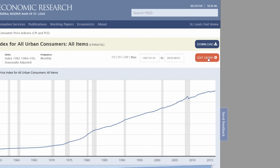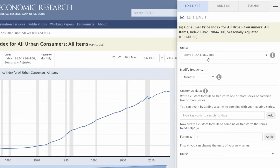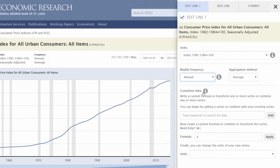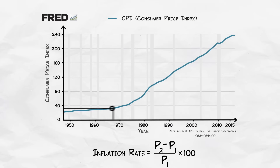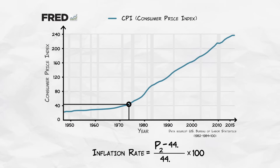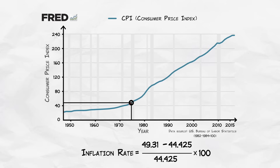By clicking on Edit Data Series, we can change to an Annual Series. Now we can see that in 1973, the CPI was 44.425, and in 1974, the average price of the CPI basket had risen to 49.317.